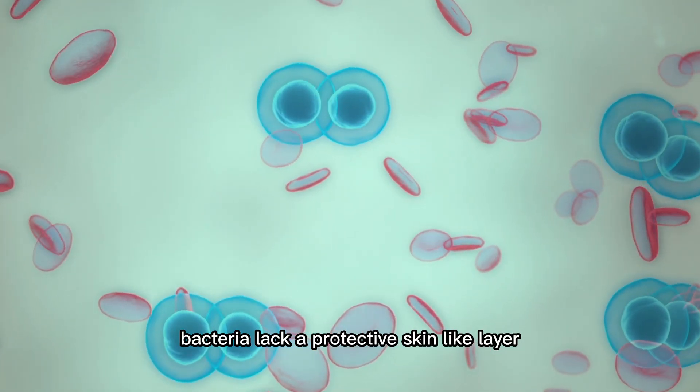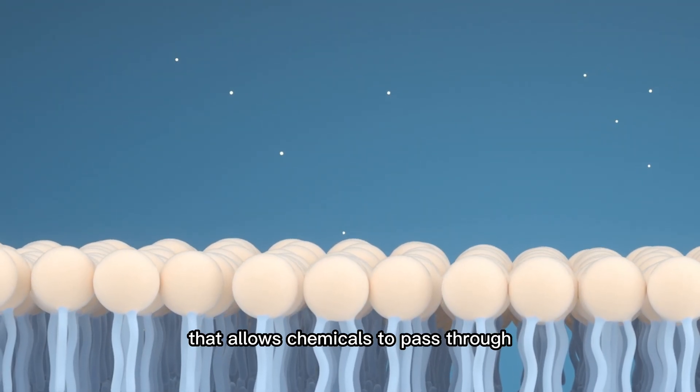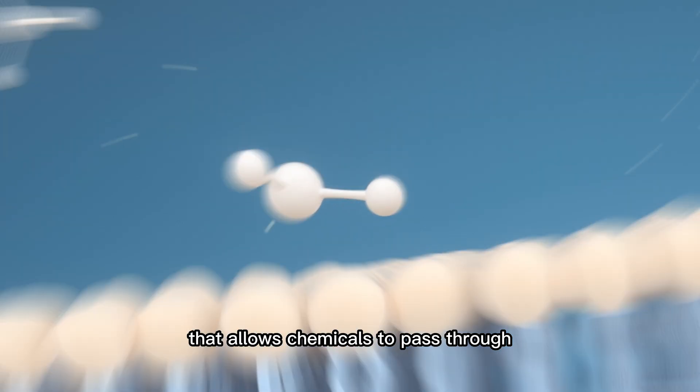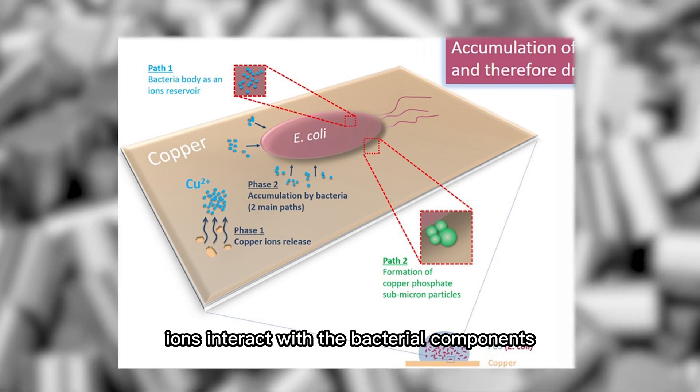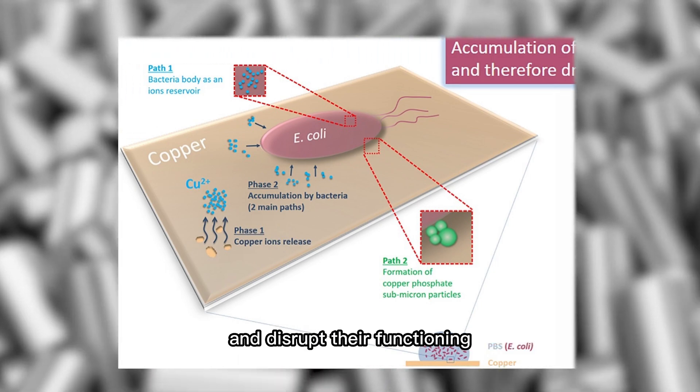Bacteria lack a protective skin-like layer and have a membrane that allows chemicals to pass through. When bacteria come into contact with copper, the released copper ions interact with the bacterial components and disrupt their functioning.